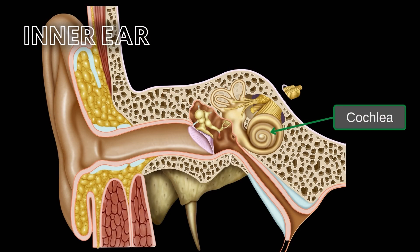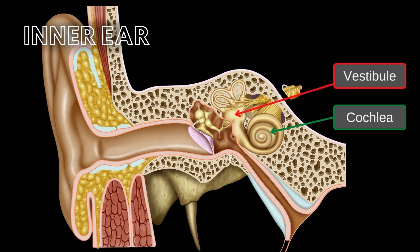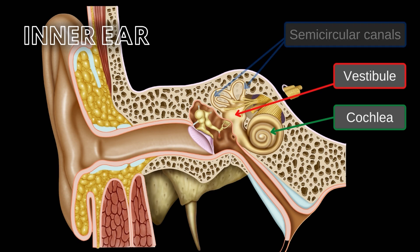The cochlea translates mechanical vibration of sound into nerve impulses. The vestibule has two parts — the utricle and saccule — that are involved in equilibrium. The semicircular canals contain receptors that respond to angular acceleration.